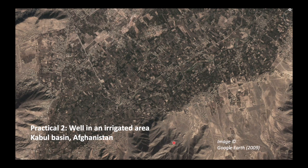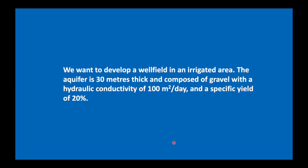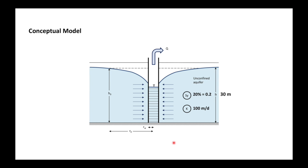Let's use this equation in a practical example. We're going to look at the Kabul basin in Afghanistan — a dry area with a lot of recharge from irrigation, so it could apply to other parts of the world as well. We'll develop a well field in an irrigated area assuming the aquifer is 30 meters thick, composite gravel, with a hydraulic conductivity of 100 meters per day and a specific yield of 20 percent.